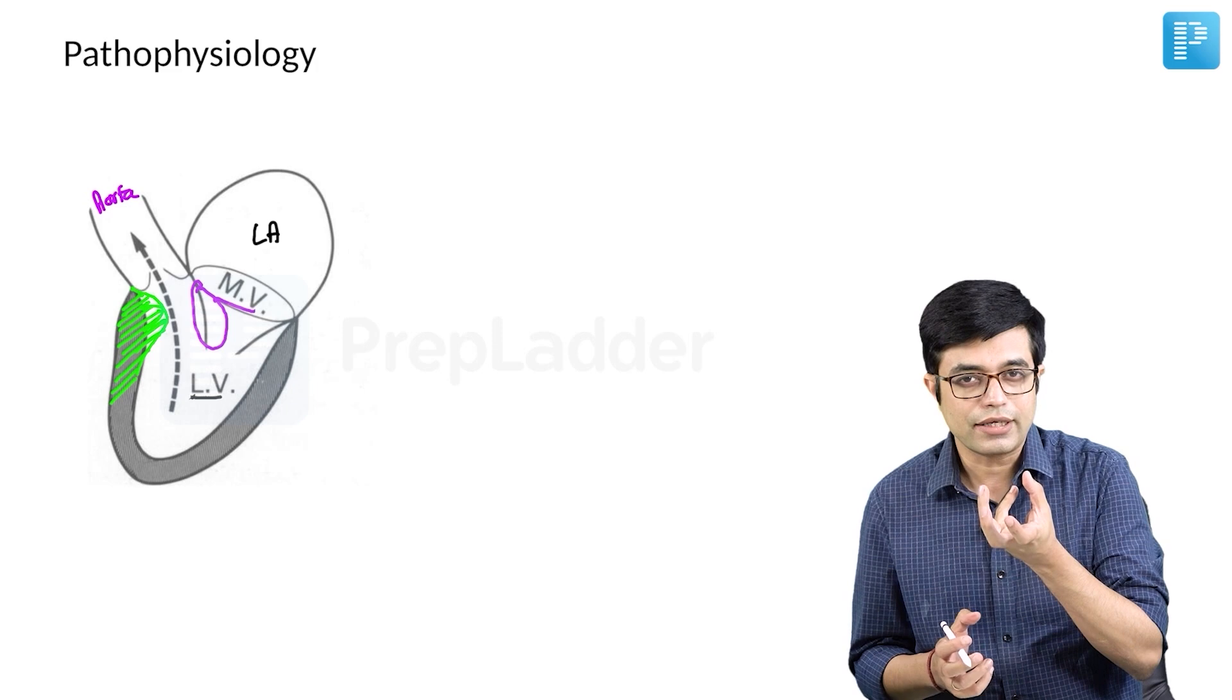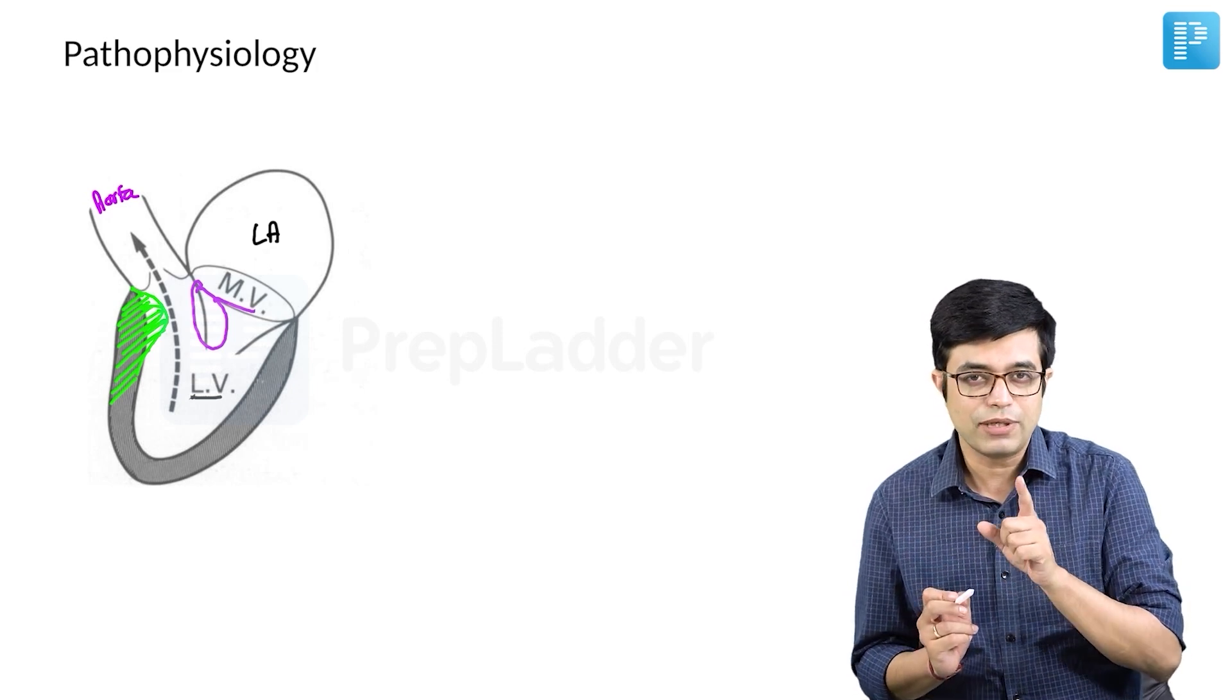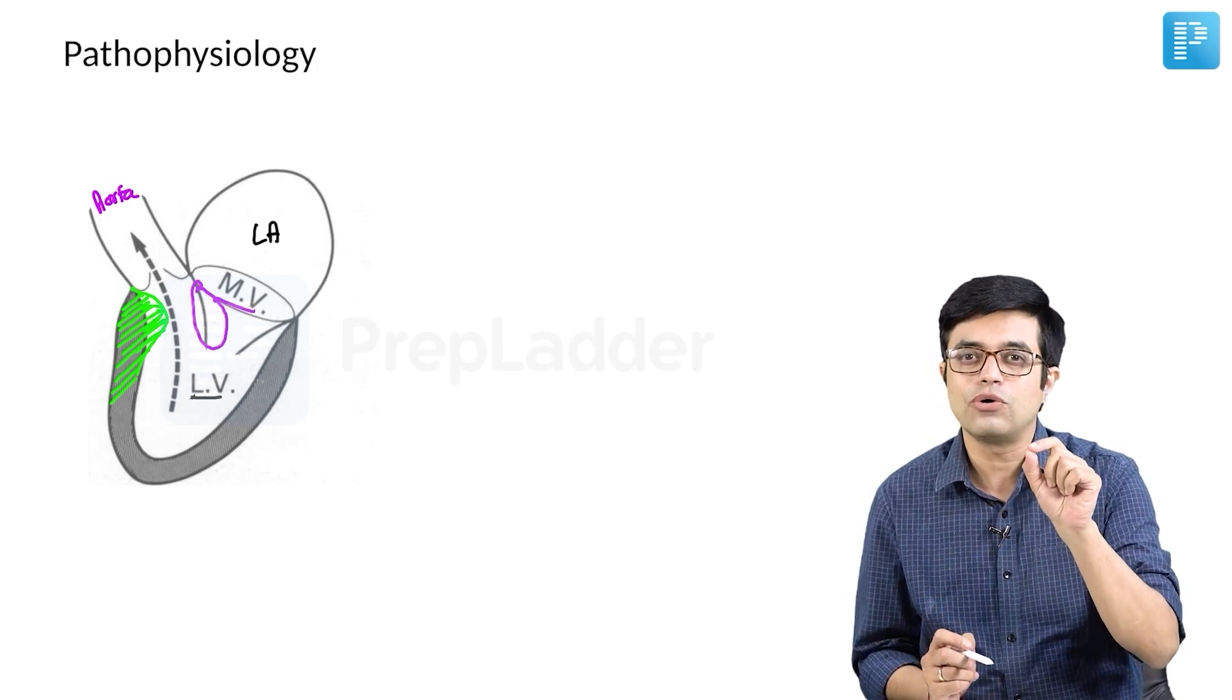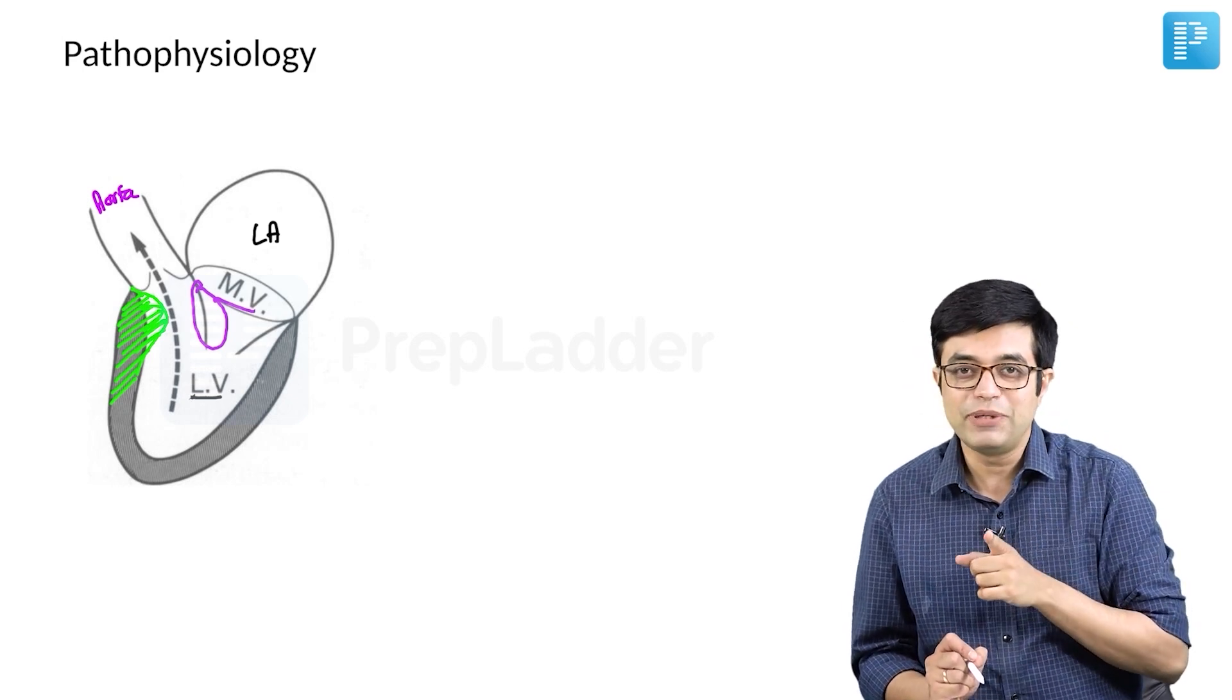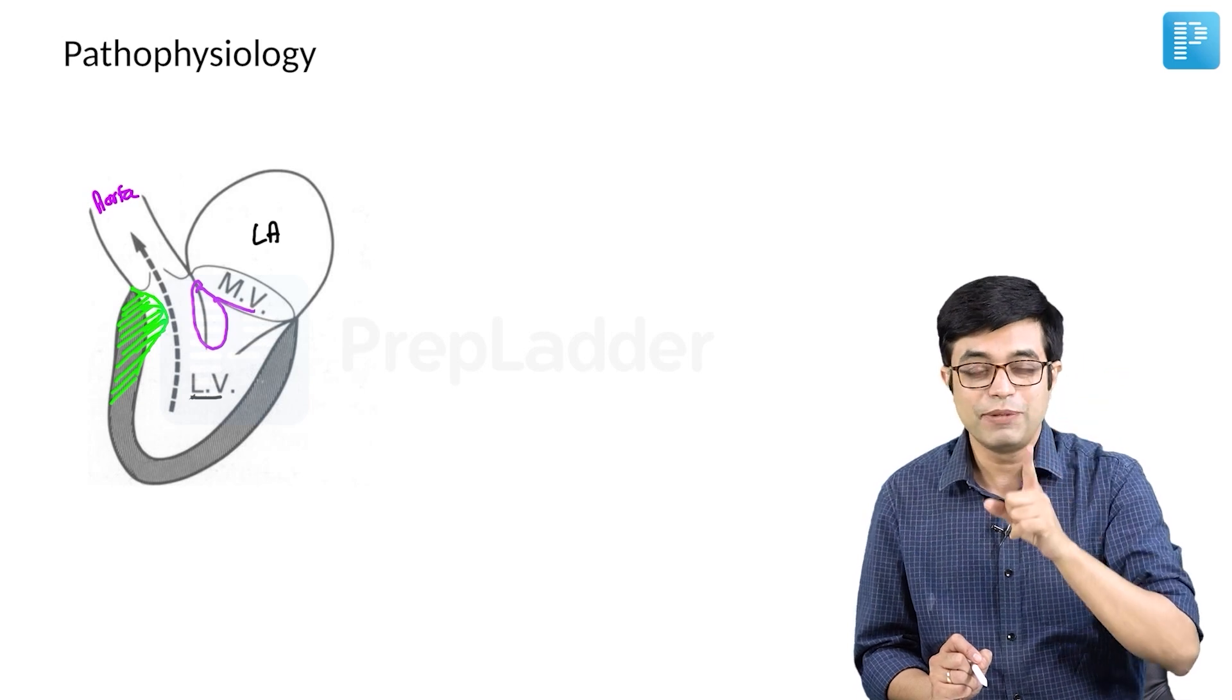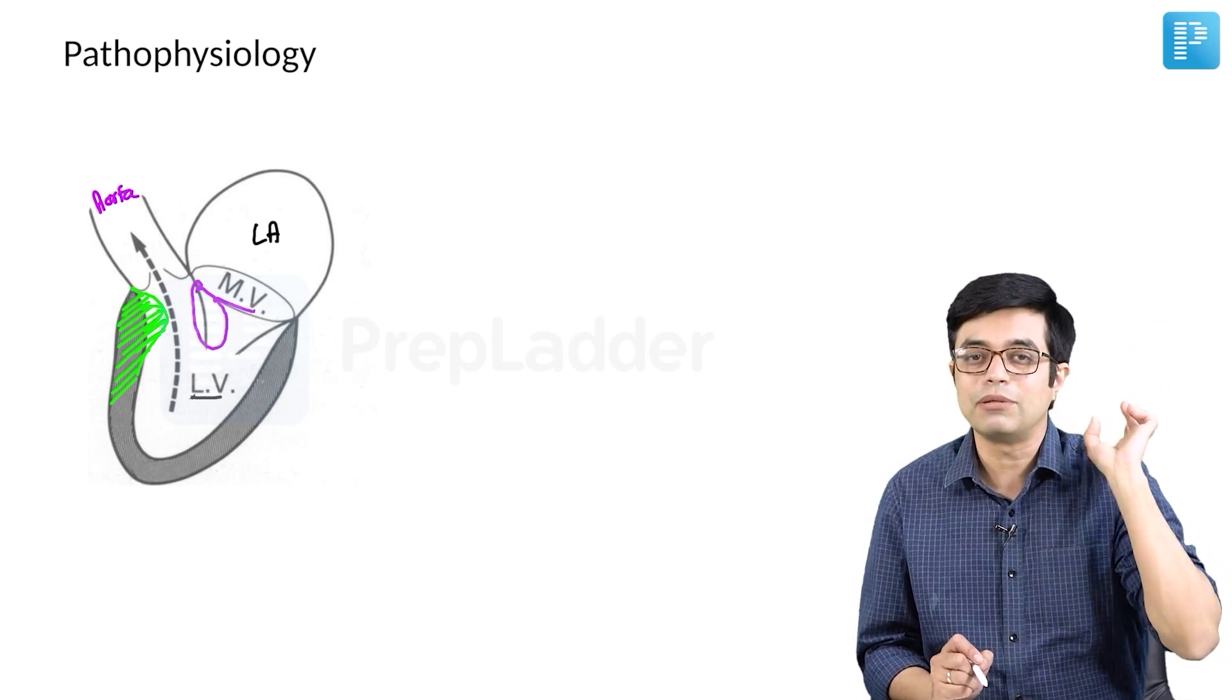Whenever LV is contracting, blood, the jet of blood moving into aorta is now flowing through a narrow area. So speed of flow is increasing. Speed of flow increasing will produce a murmur here.